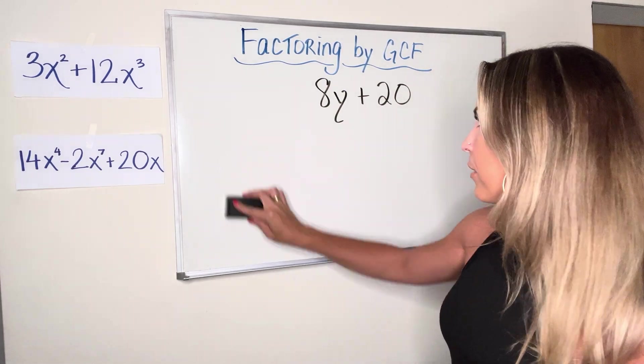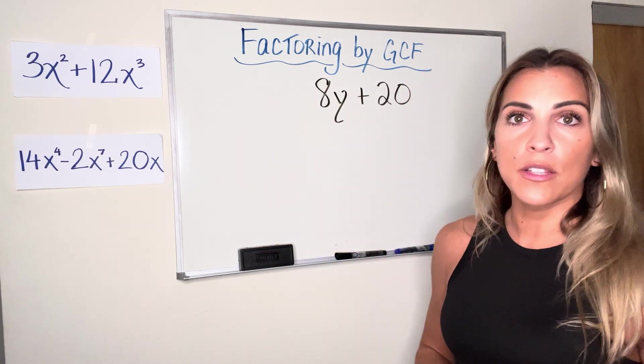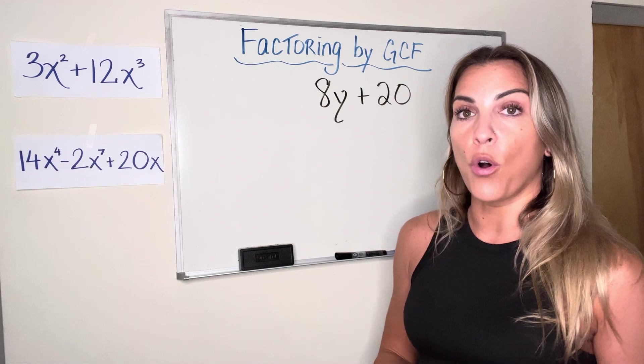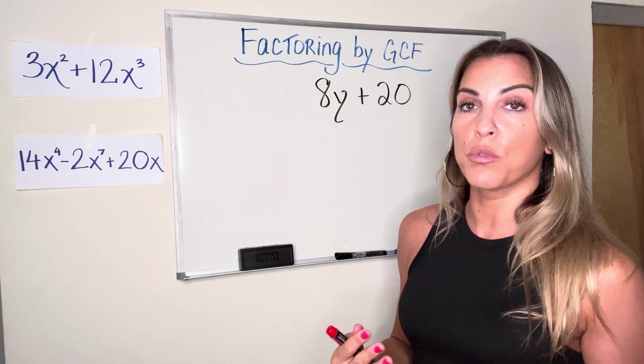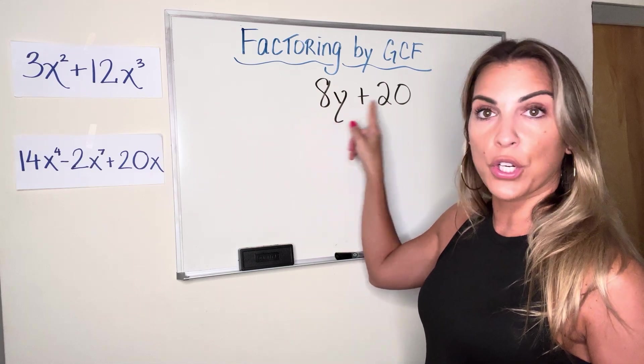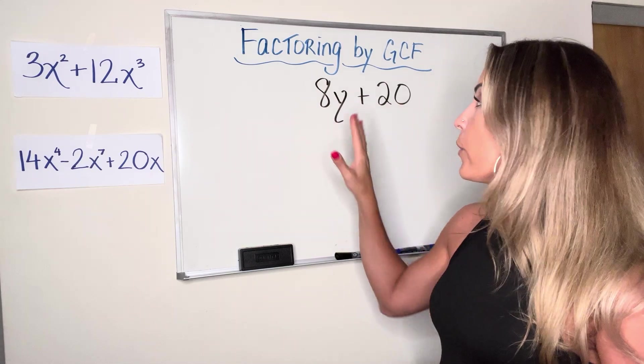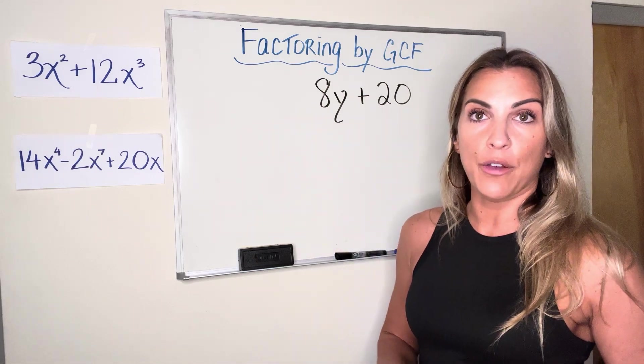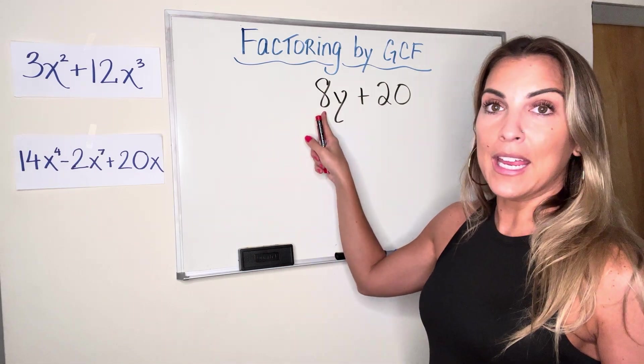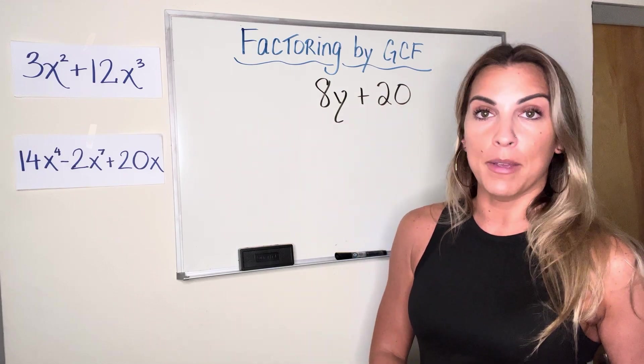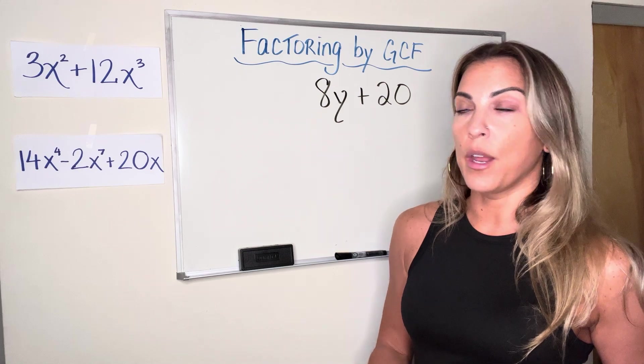All right, so let's start with 8y plus 20. When you're using the Greatest Common Factor Method, it means that you're going to look for the greatest common factor of all of the terms in our expression. So terms are separated by addition or subtraction, meaning that I have two terms here in this expression. So ignore the variable for a second. We're just going to look at the numerical portion of the GCF first. So looking at the number 8 and the number 20, I'm looking for the greatest number that they have in common as a factor.